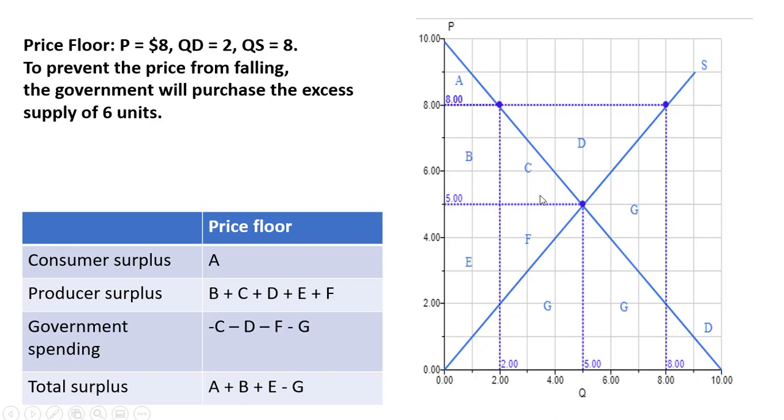G is all this area right here. So C, D, F, and G represents government spending. And since this is an outflow, I'm putting minus signs here.